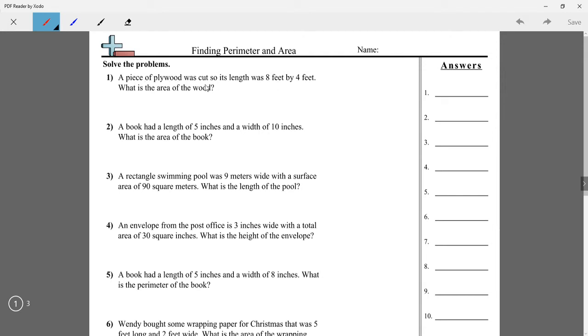A piece of plywood was cut so its length was 8 feet by 4 feet. What is the area of the wood? Area, like I said, equals length times width. So we are just multiplying 8 times 4, which equals 32.